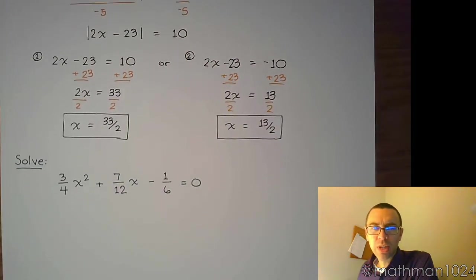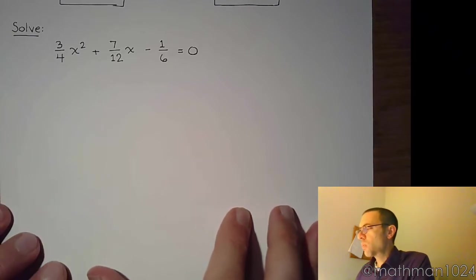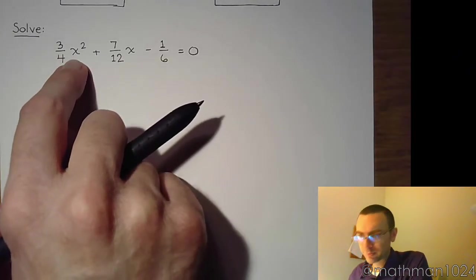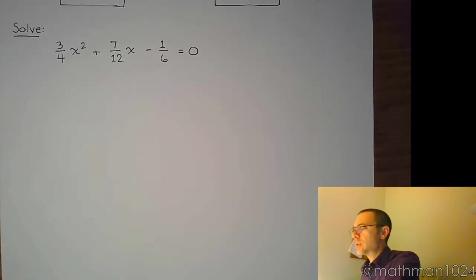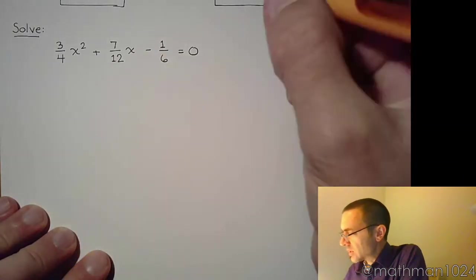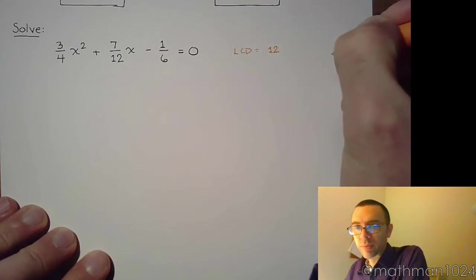It's got fractions. So we understand that we have something that is quadratic. We see the x squared right here. And then what we want to do is we want to rewrite this so we don't have the fractions, just by multiplying everything times the LCD. So when we look at these denominators, the LCD for all of this is 12.